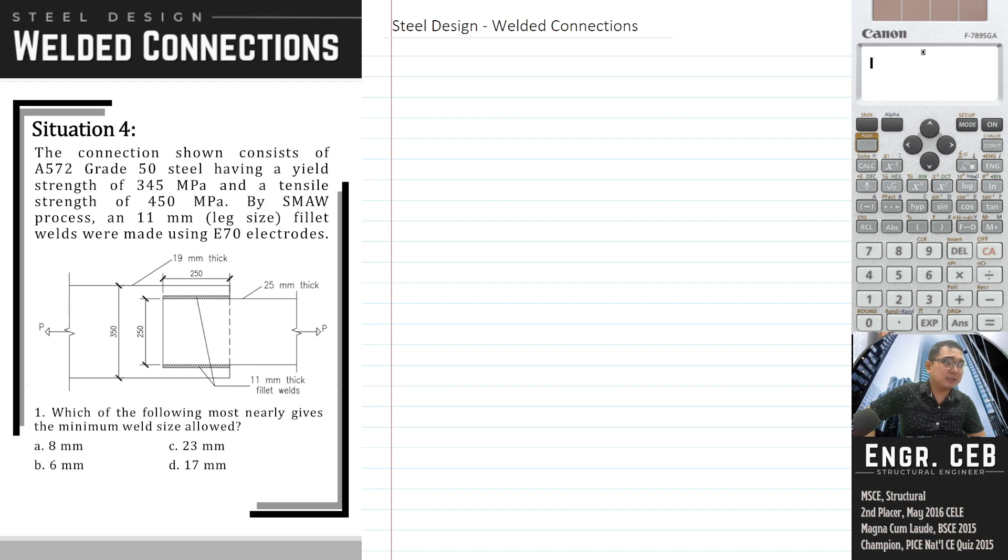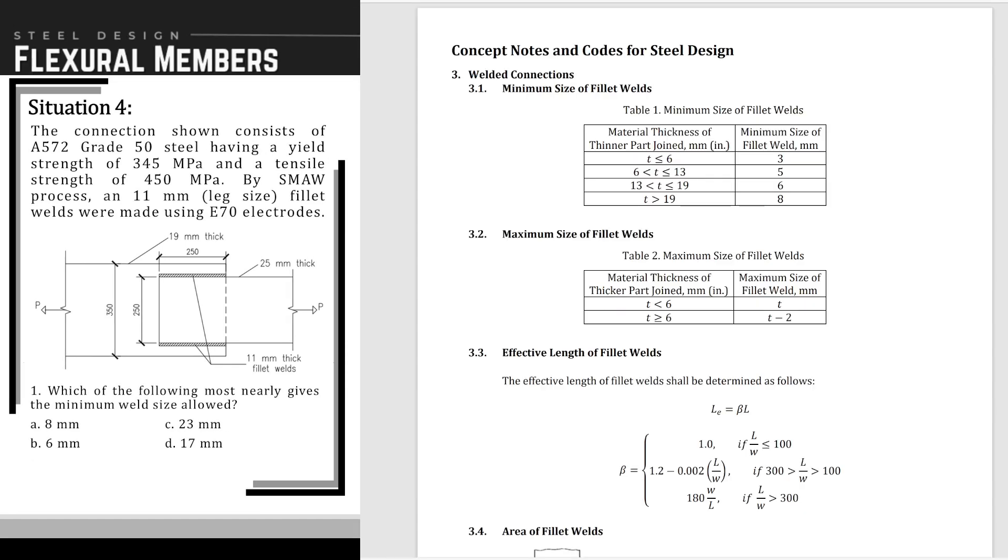Which of the following most nearly gives the minimum weld size allowed? So again, we are asked to determine the minimum weld size. We will base this on the thickness of the thinner part. Let's go back to the code for that.